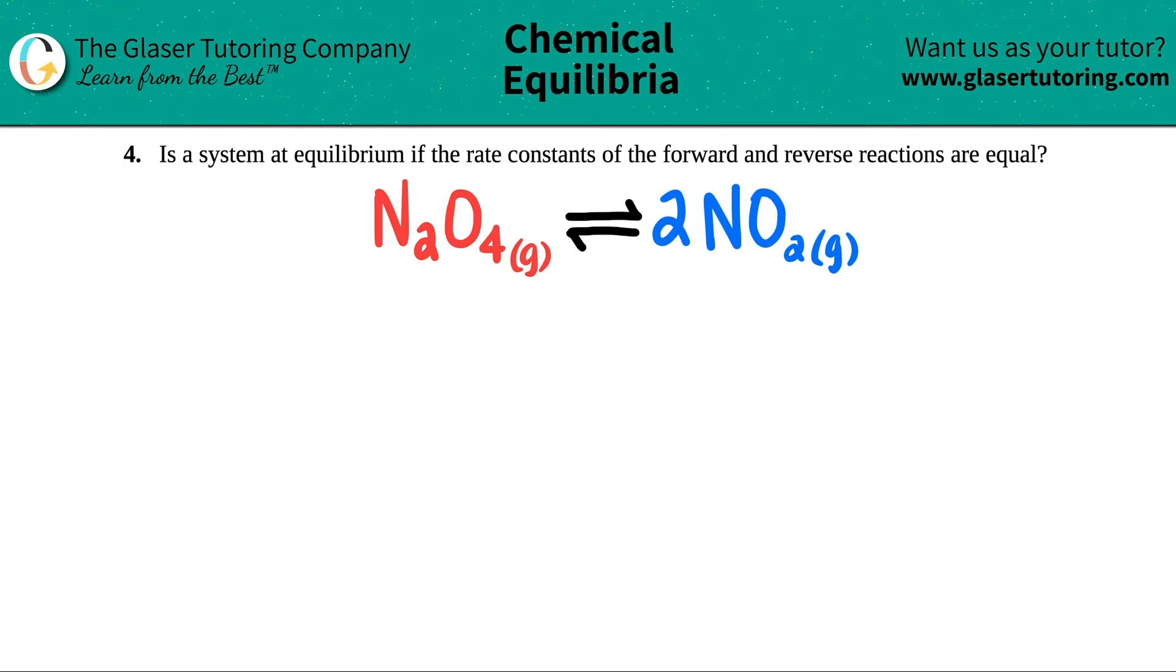Number four: Is a system at equilibrium if the rate constants of the forward and reverse reactions are equal?